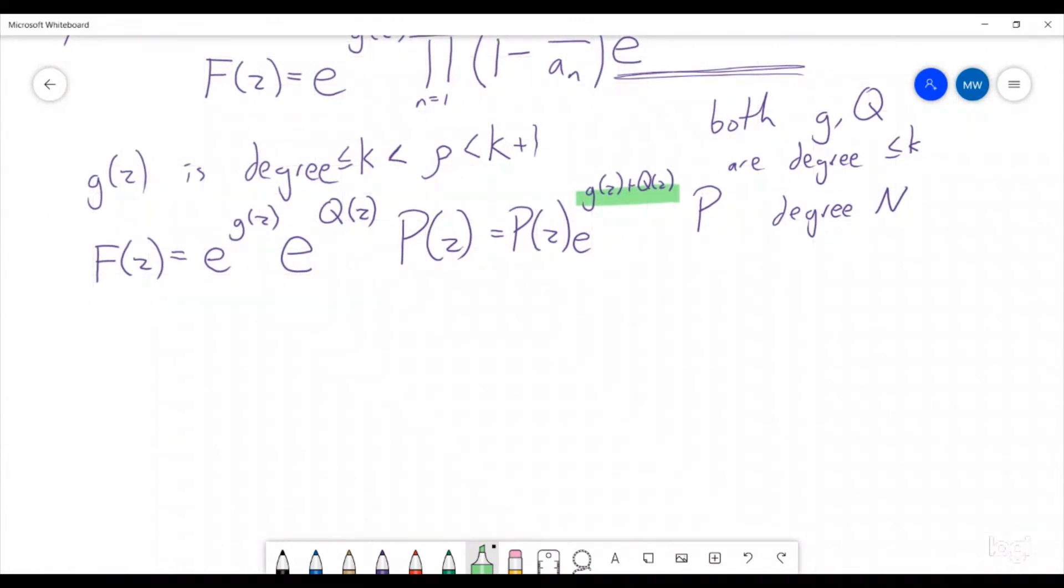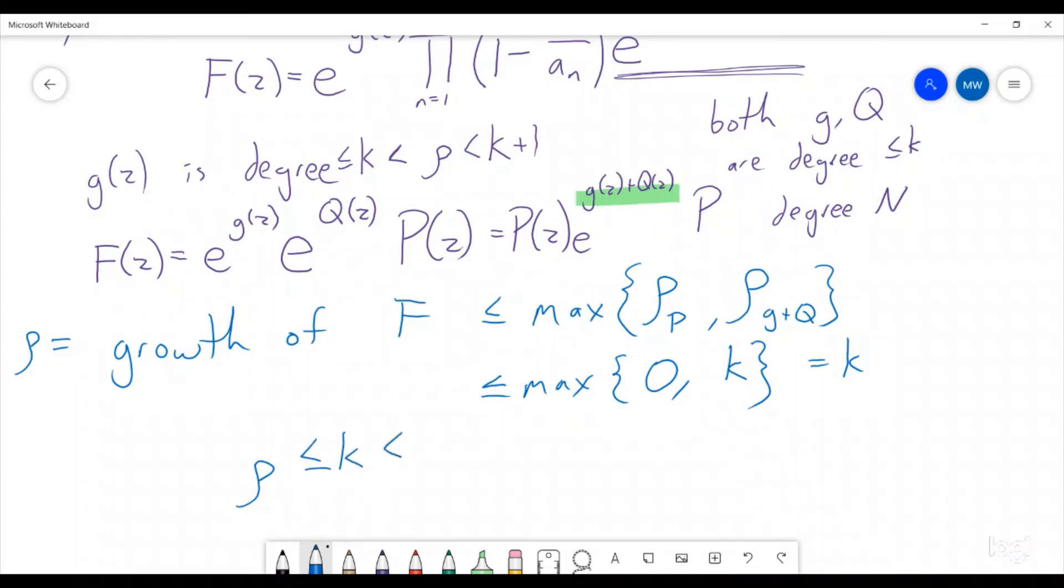which means that because any polynomial has growth order zero, the growth order is less than or equal to the maximum of the growth order for p and the growth order for g plus q, which is the same thing as the maximum of zero and k. Well, that's going to be k. So the growth of f has to be less than or equal to k, which is a contradiction because the growth of f was rho. So we have rho is less than or equal to k, which is strictly less than rho.